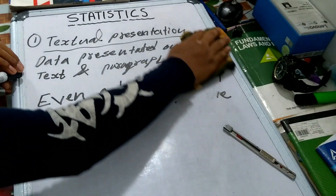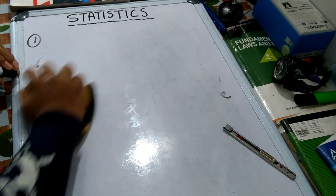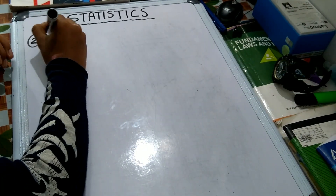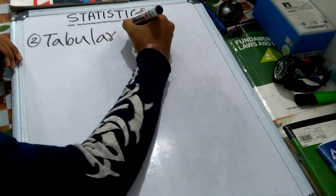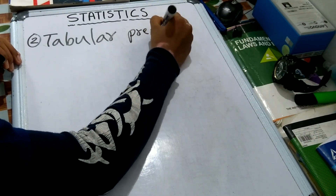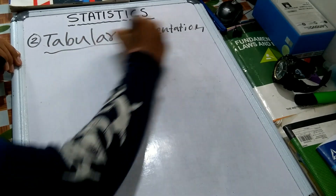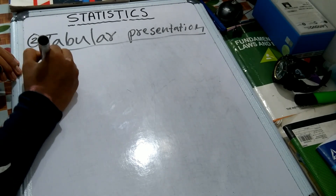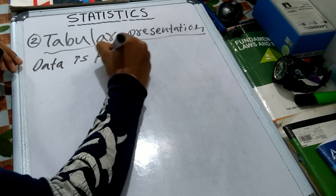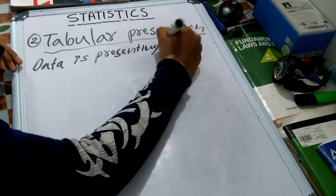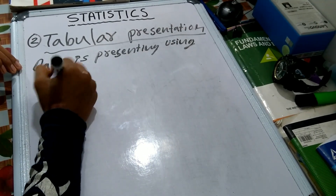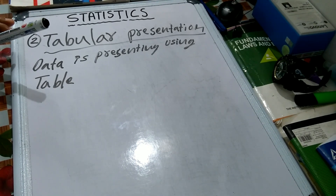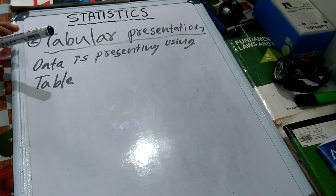Next is the tabular method. Tabular presentation. In tabular presentation, data is presented using a table. I place a table, or one table. I place this table data — we can add a table and add parts of a table.